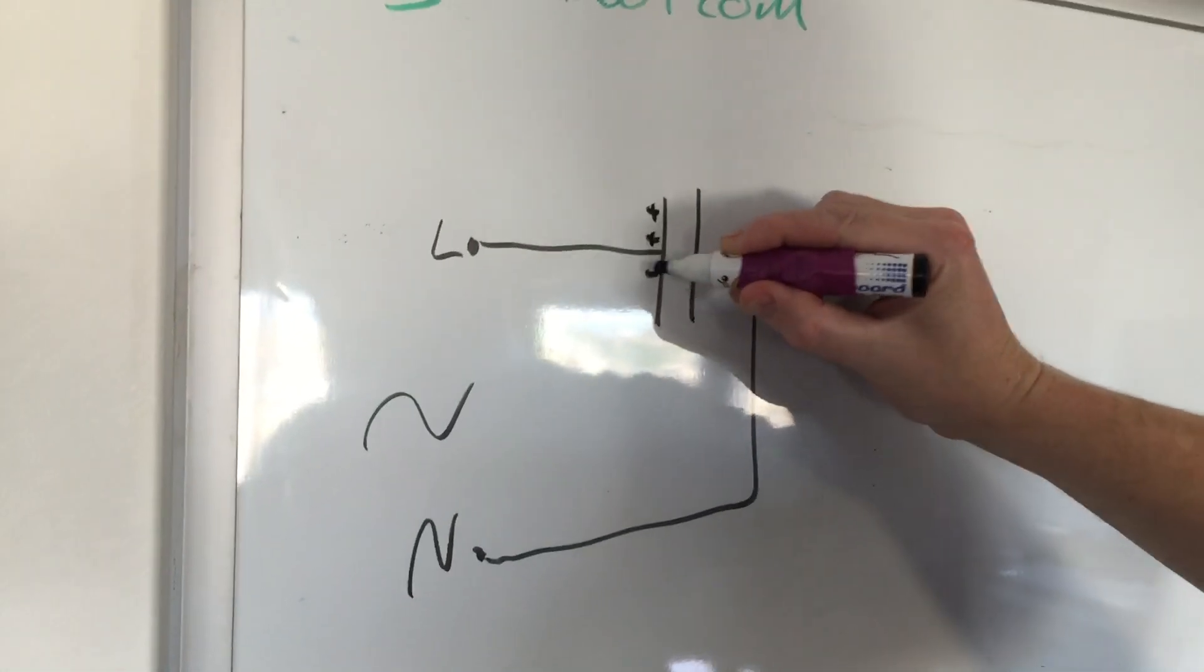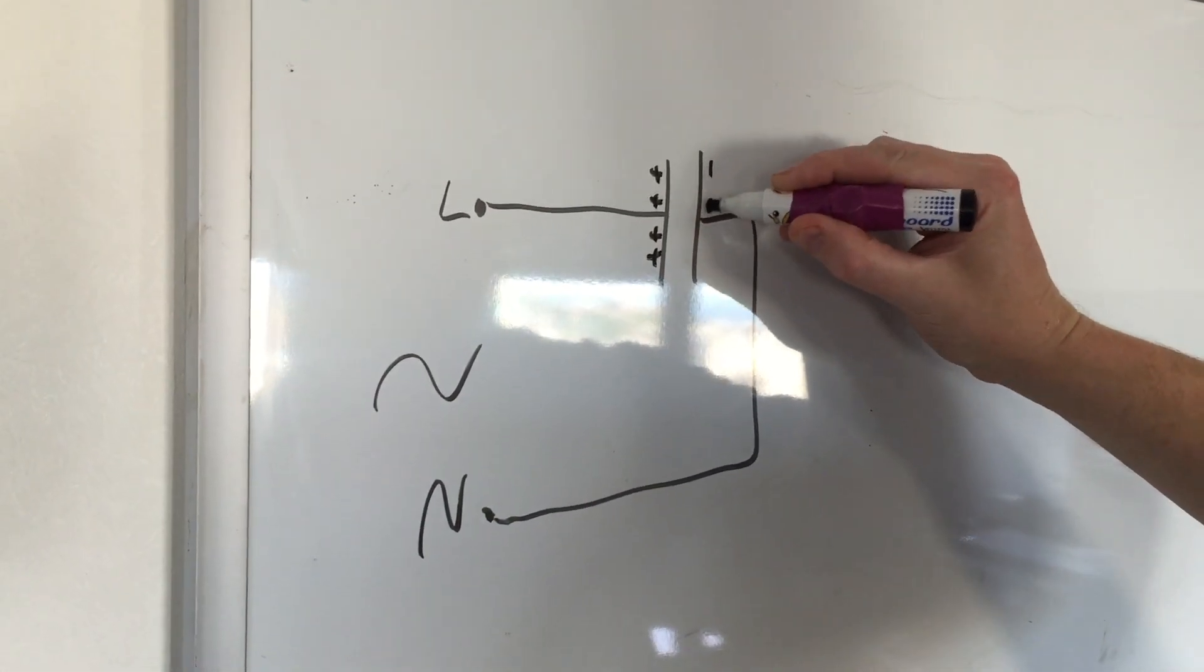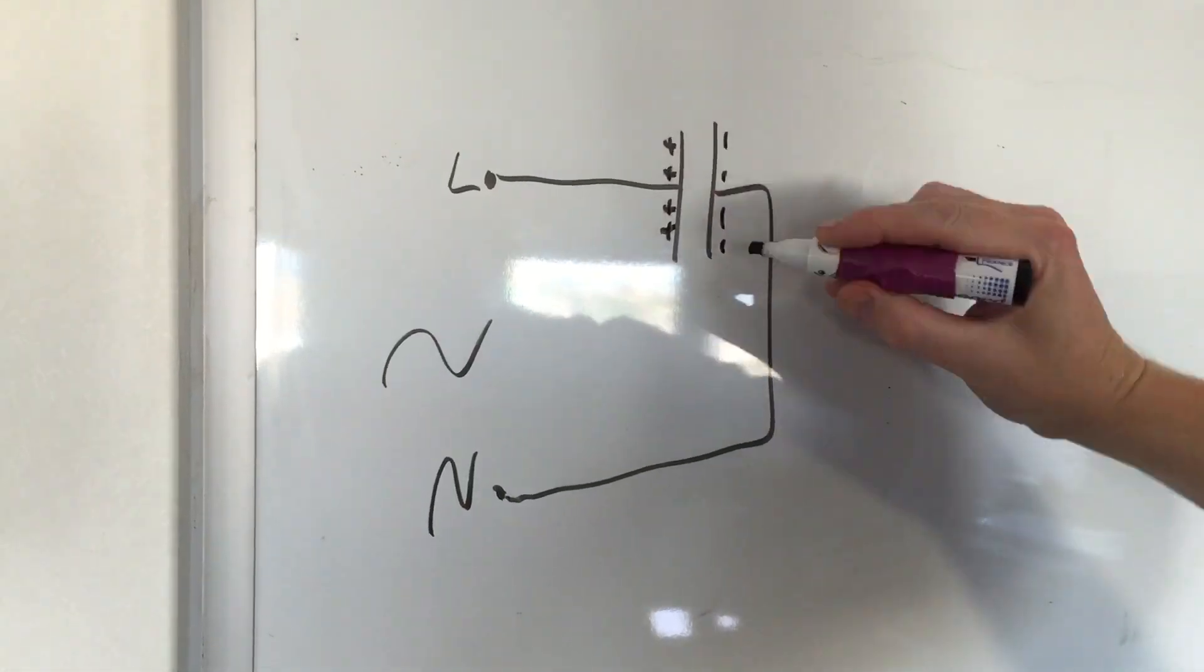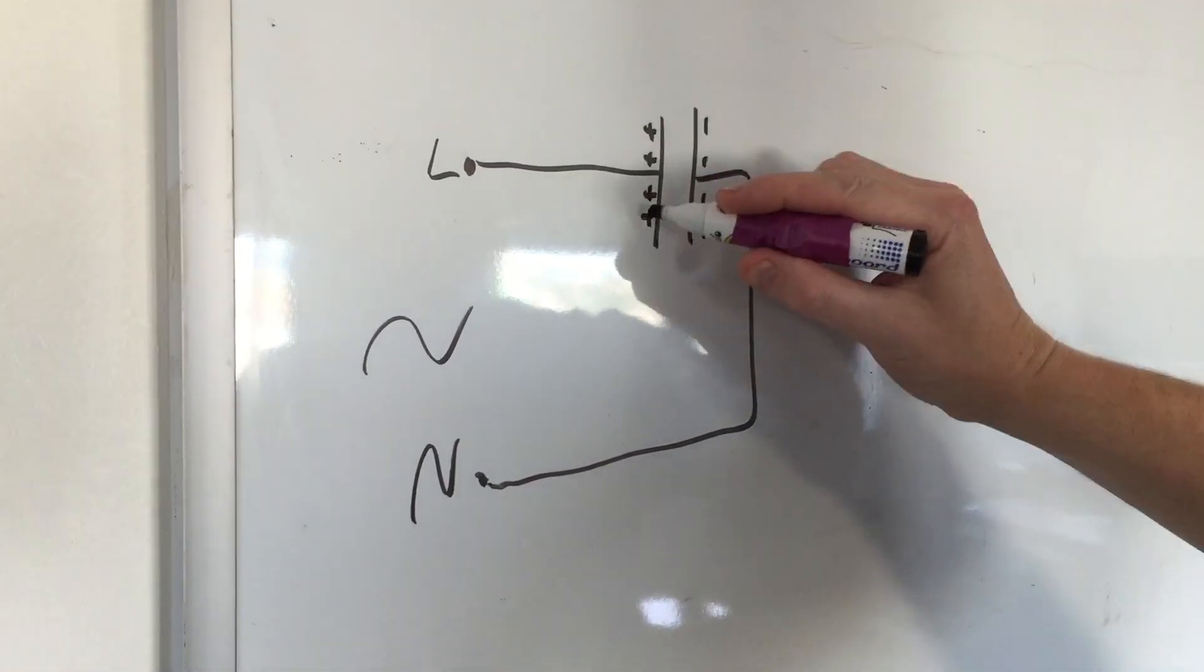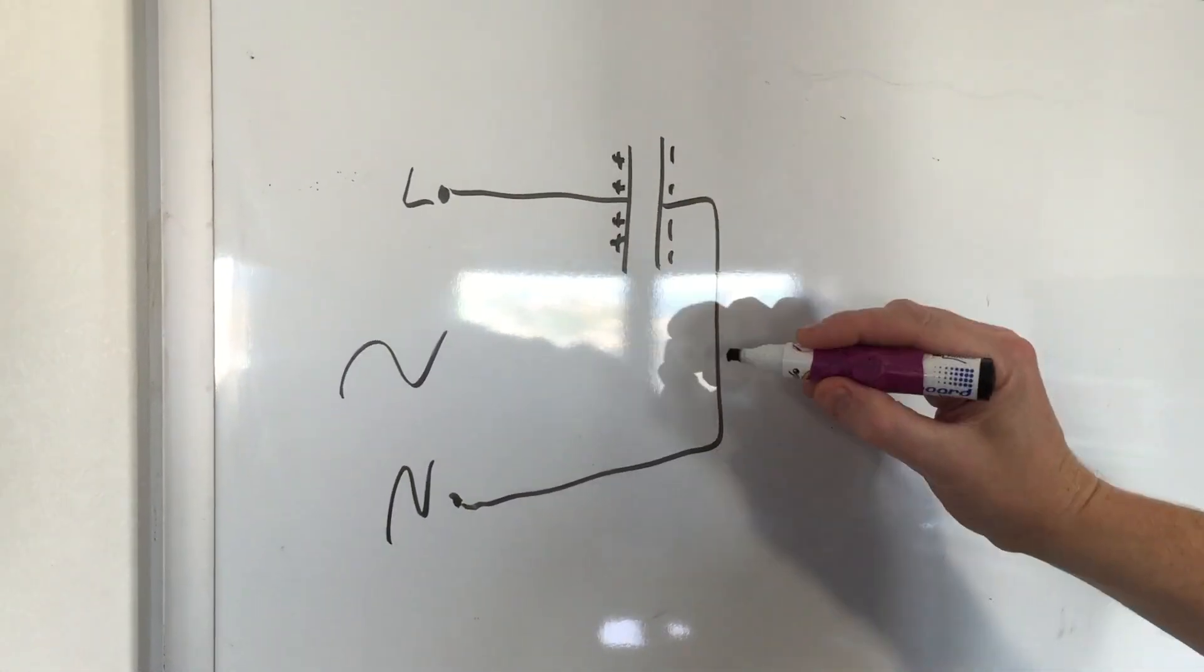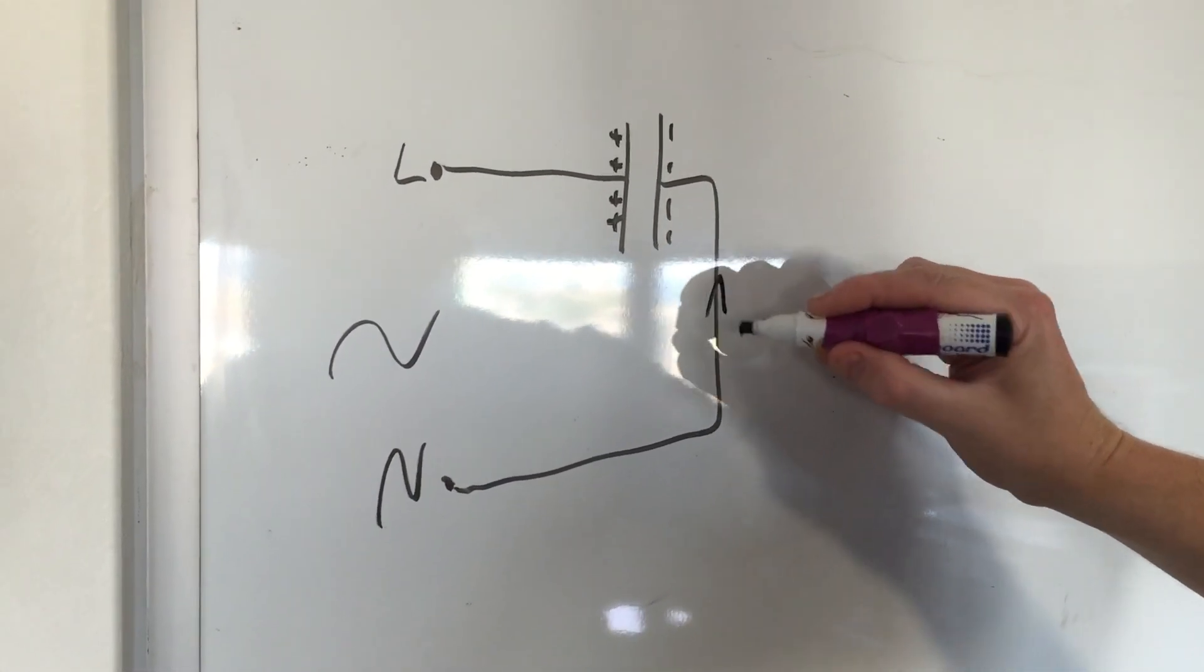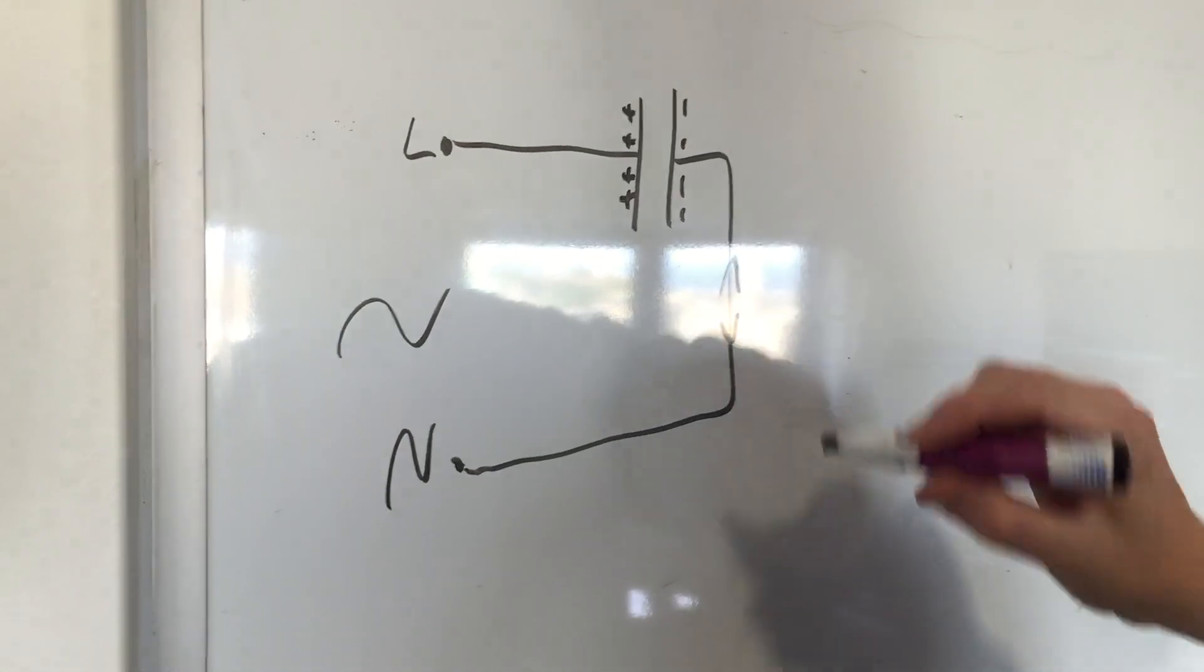For instance, on one polarity you'd get a positive charge on one side and negative on the other. Then when the polarity reverses it will be the complete opposite - positive on this side, negative on the other. But in that time, depending on the value of the capacitor, a small amount of current will flow in one direction and then the other direction.